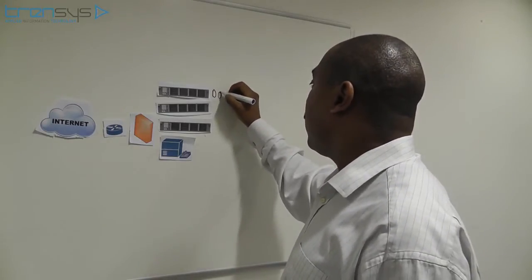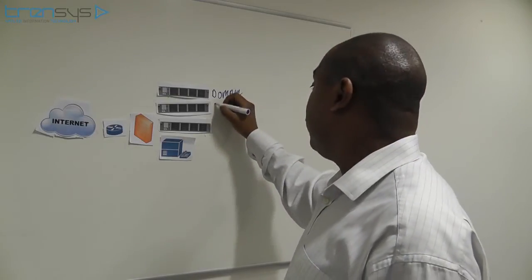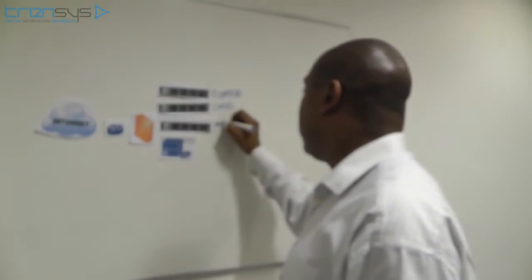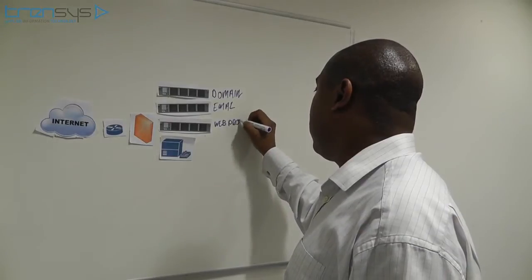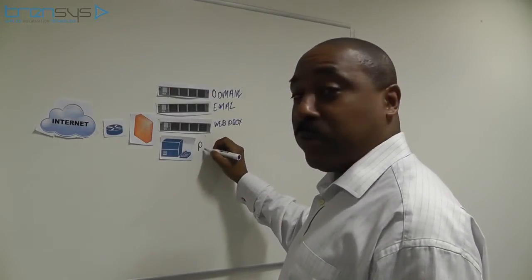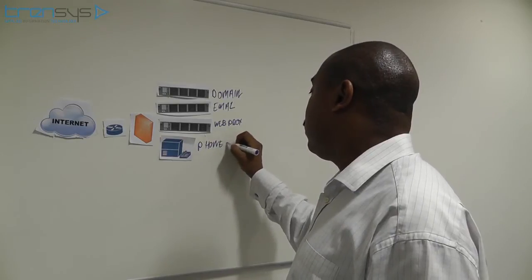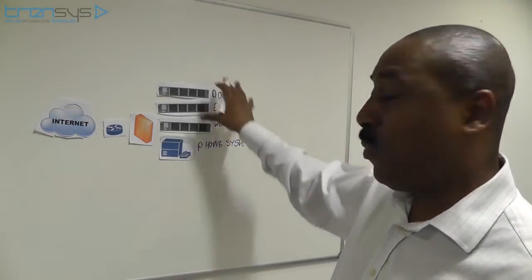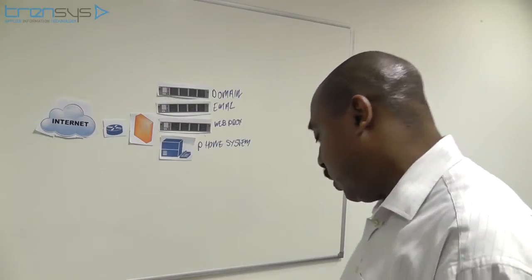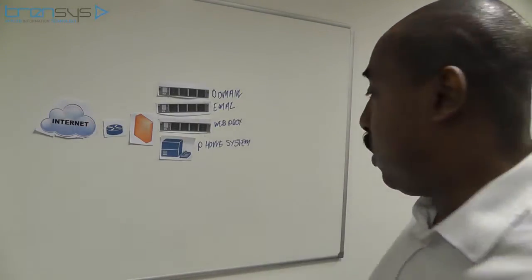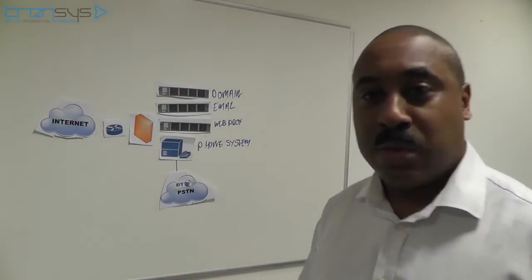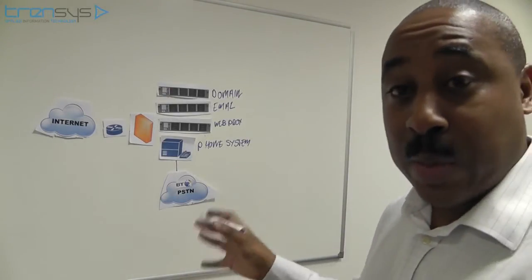That's no good without any services. We've got a domain server, we've got email, and we've also got a web proxy. Then we've got our phone system, and if you've set up more than one branch, obviously you've got to replicate that. Our phone system connects to British Telecom. That's your typical business setup.